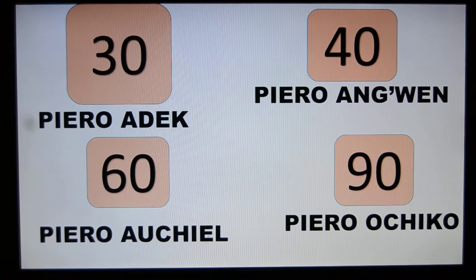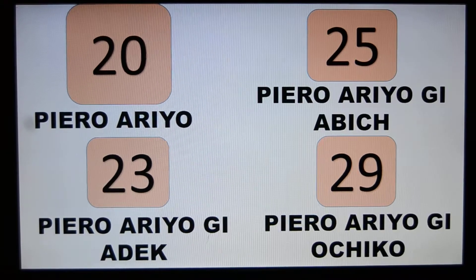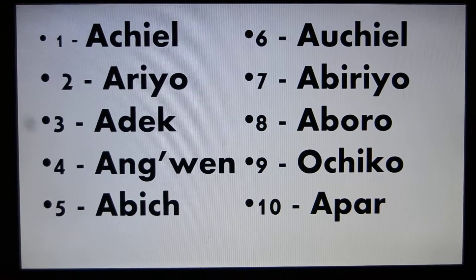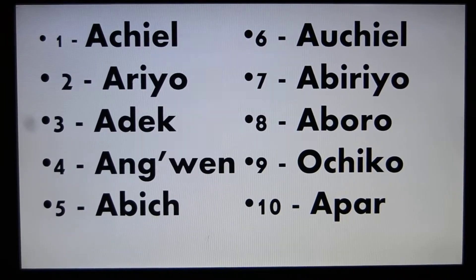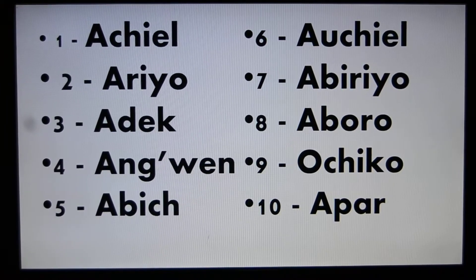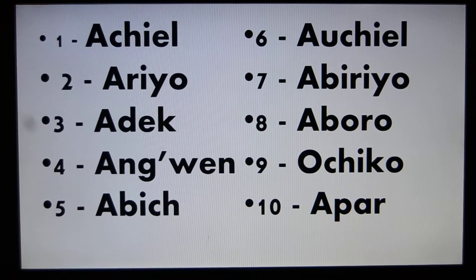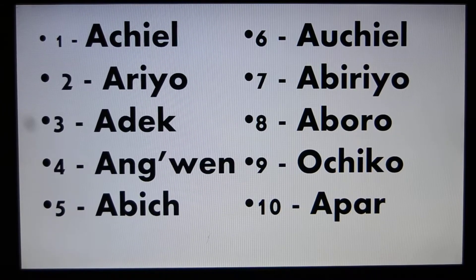That is the way counting is done. All you need to master is the first set — ACHIEL, ARIO, ADIK — and then the tens: 10, 20, 30, 40 — that is APAR, PIERO ARIO, PIERO ADEK, PIERO NGUEN, PIERO ABICH, PIERO AUCHIEL, PIERO ABIRIO, PIERO BORO, PIERO ACHIKO, and then PIERO APAR.